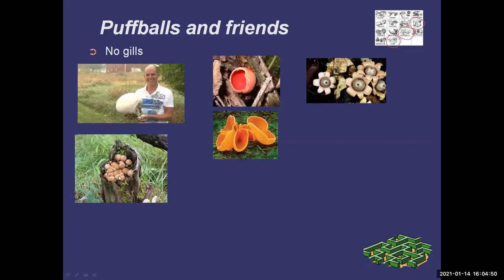I'll mention a couple of common cup fungi. This is a scarlet cup and this is an orange peel fungus. Scarlet cups you'll often see in the spring — some of the first mushrooms to come out, and they're really pretty. I believe the orange peels are edible. And then these are earth stars, which aren't edible, but they're just so weird and pretty at the same time.